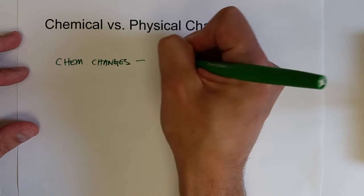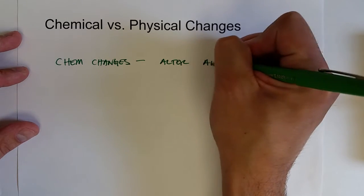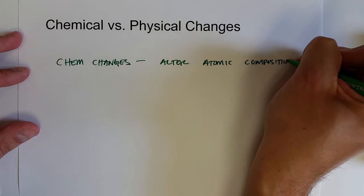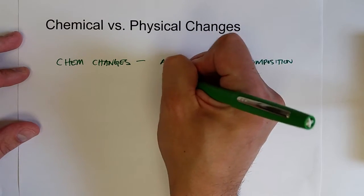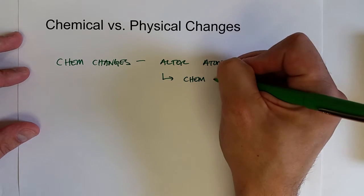Chemical changes alter the atomic arrangement or atomic composition. A lot of times chemical bonds are broken or formed.